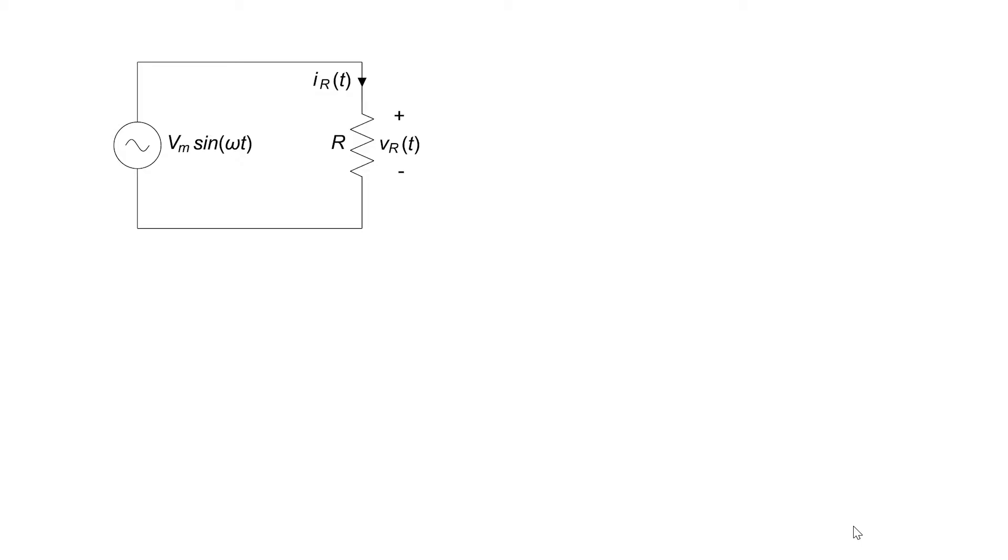In order to introduce this topic, let's take a look at a simple example consisting of an AC voltage source in parallel with a resistor. Because the resistor is just in parallel with the source, I can write the voltage across the resistor as just the voltage at the source.